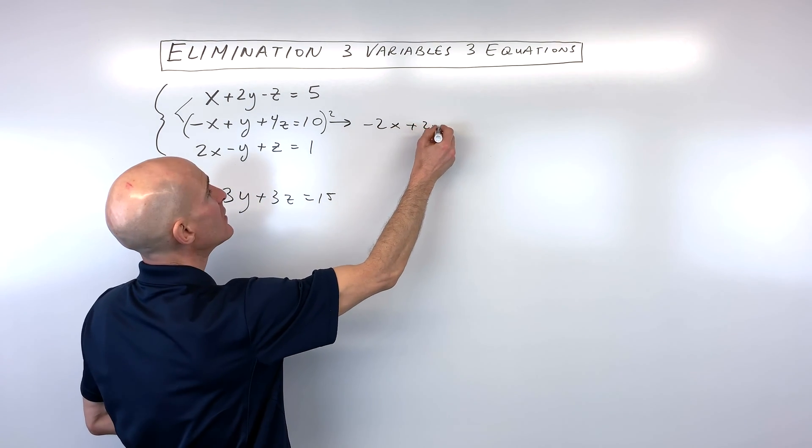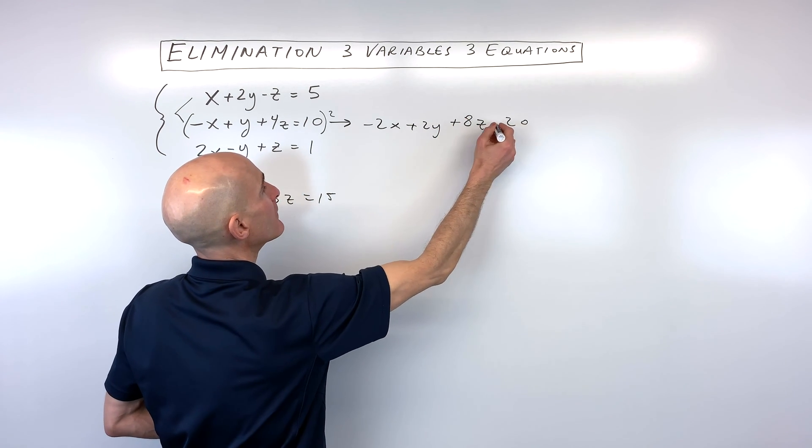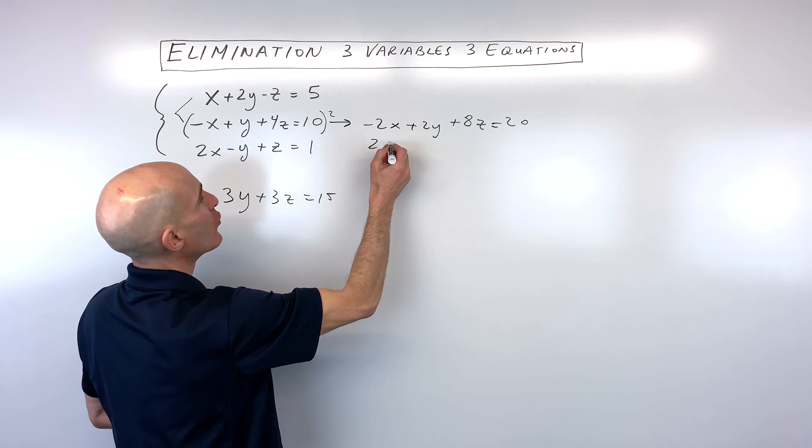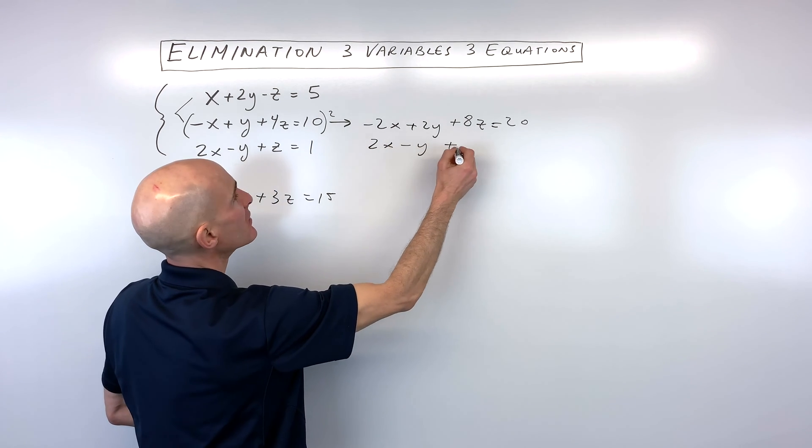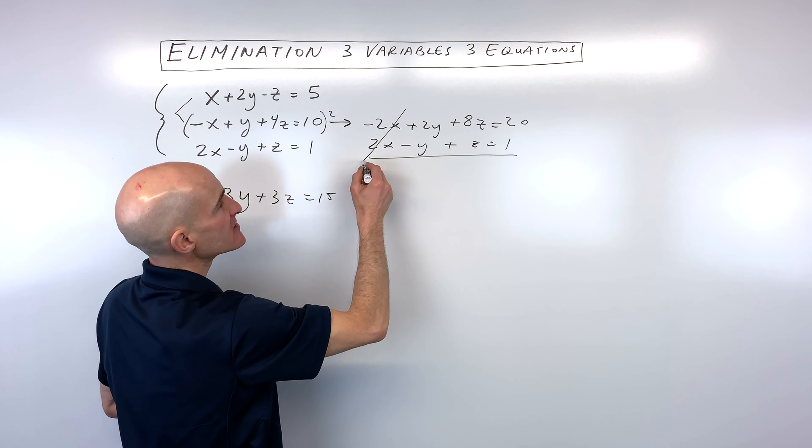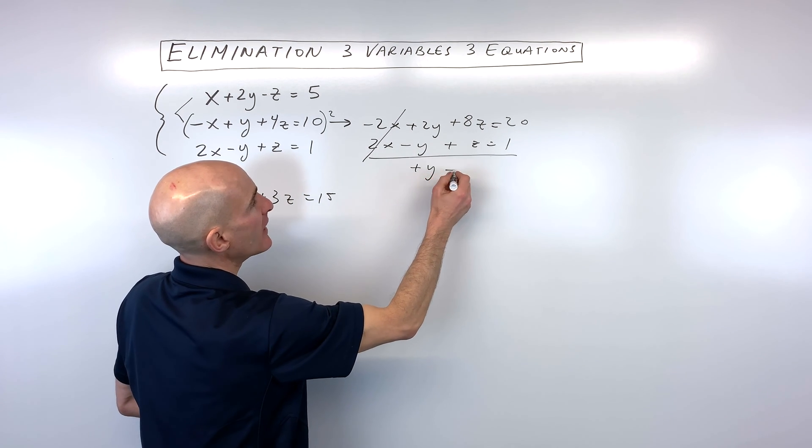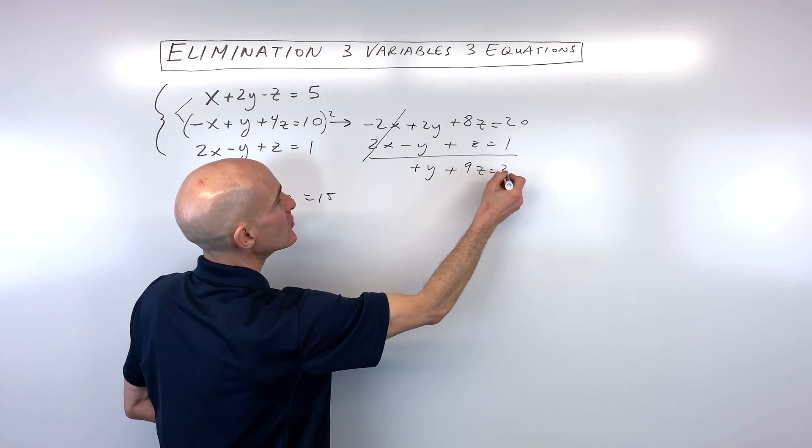So we get negative 2x plus 2y plus 8z is equal to 20. And if we just bring this equation over, 2x minus y plus z equals 1, you can see if we add straight down, the x's are canceling out now because one's negative, one's positive. We get positive y plus 9z equals 21.